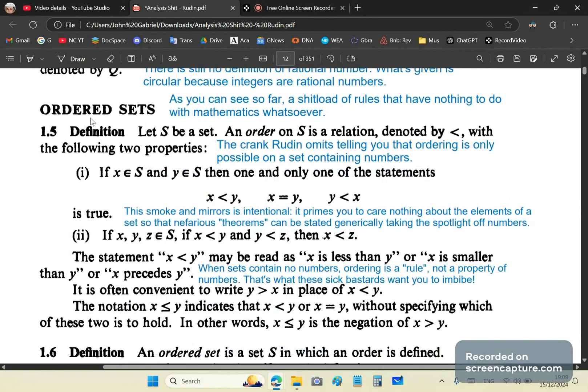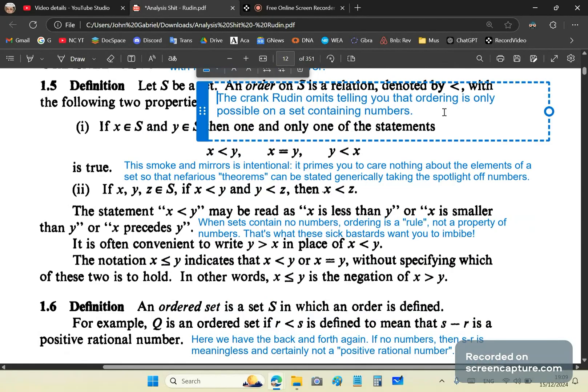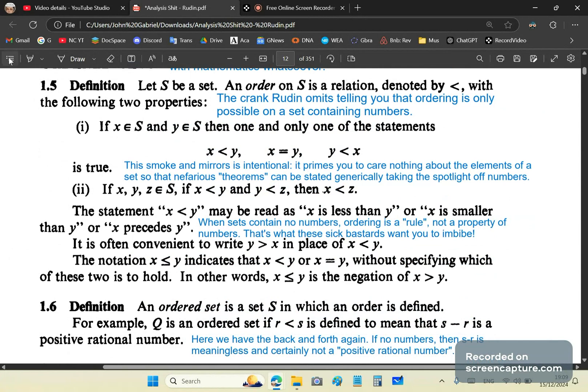An ordered set. So the definition says let S be a set and an order on S is a relation. What the fuck is a relation? You're not told what that is. But you're about to learn now suddenly what a relation is as well. And it's denoted by this less than sign. So it has the following two properties. These are rules. It's saying that if X and Y are elements of S, then only one of the following are true. Now, of course, you cannot do this comparison if you don't have numbers.